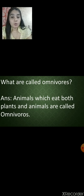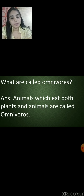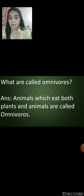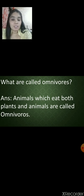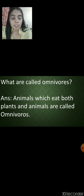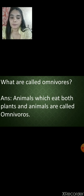The next category is omnivores. What are omnivores? Animals which eat both plants and animals are called omnivores. An example is the dog. So animals are divided into three groups: herbivores, carnivores and omnivores. Revise what each group is called and try to give examples.